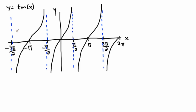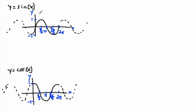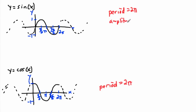You can draw as many of these tangent curves as you need. The important thing is that the period of tangent is just pi — from one point to the equivalent next point is a distance of pi. By contrast, sine and cosine both have a period of 2 pi. Sine and cosine also have an amplitude of 1 — they go up 1 and down 1 from the axis.